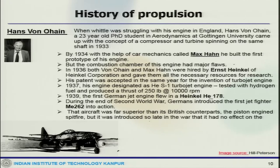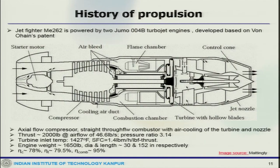During the end of the Second World War, Germans introduced the first jet fighter ME 262 into action. That aircraft was far superior to the British piston-engine Spitfire counterpart, but it was introduced so late in the war that it had no effect. This history of jet engine propulsion shows how things developed sequentially to bring us to what we have today.